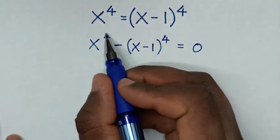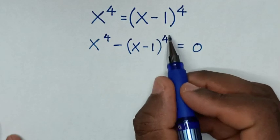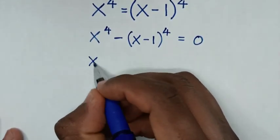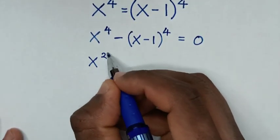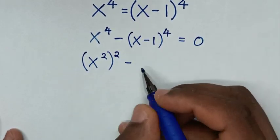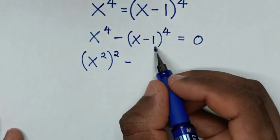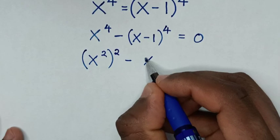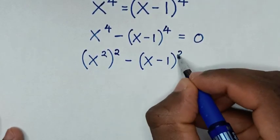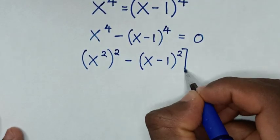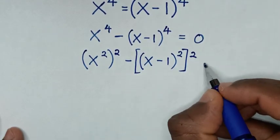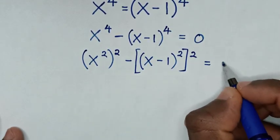In the next step we rewrite the powers of 4 as squares. So this is the same as (x squared) squared minus ((x minus 1) squared) squared, all equal to 0.